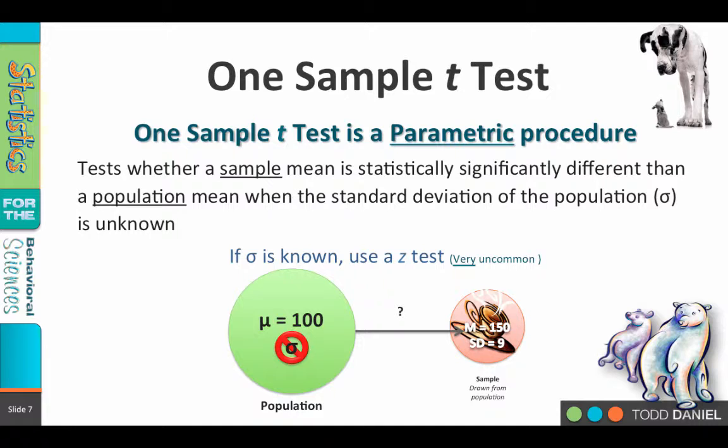Let's go back to the example with the polar bears, who on average walk 100 kilometers per day. We don't know the population standard deviation. We do know that among our caffeinated polar bears, they walk an average of 150 kilometers per day and have a standard deviation of 9. We are therefore going to use that sample standard deviation value of 9 to estimate the population standard deviation value.